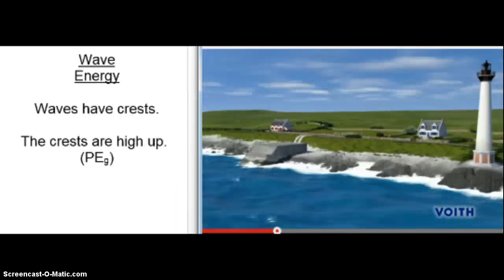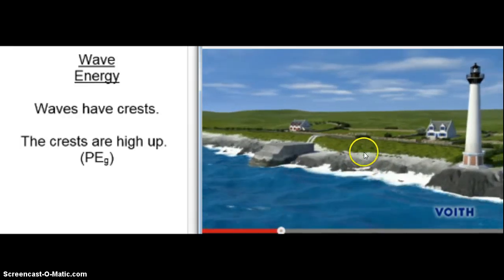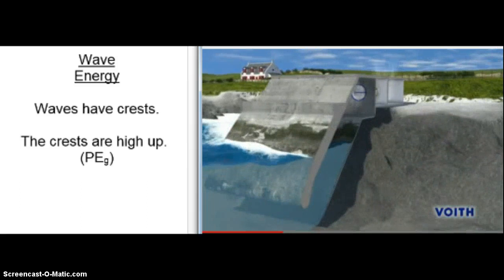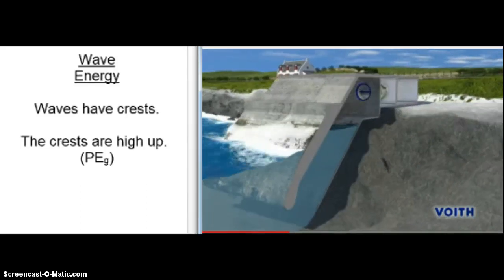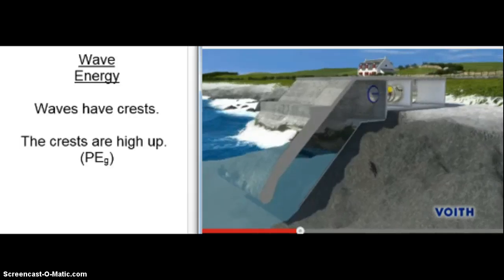The last one for us is wave energy. Waves have crests — the crests are high up, elevated above the regular water level — and so there's a way to harness that potential energy. Consider a coast: as the waves come in, they crash against the coastline. When they do, the water level goes up and down. People built a device which very cleverly captures that oscillating motion of a wave.